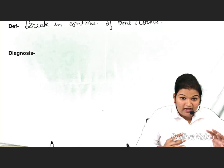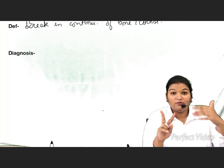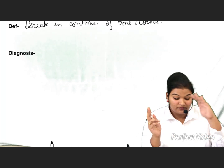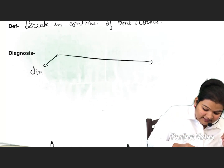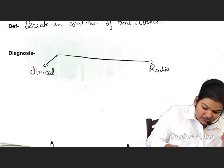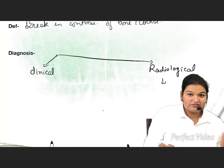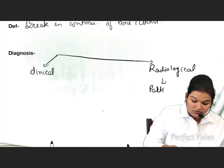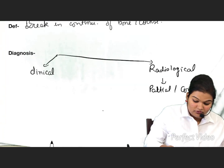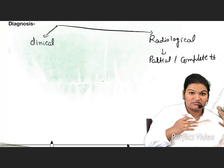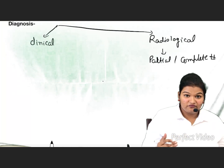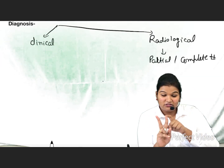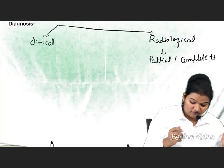For diagnosing a fracture, we have two criteria. First is clinical — how the patient presents to you, what are the clinical features. Then we have the radiological diagnosis, where we do imaging to know whether it is a partial or complete fracture. The clinical presentation can be divided into two subheadings: pathognomic clinical presentation and consistent clinical presentation.